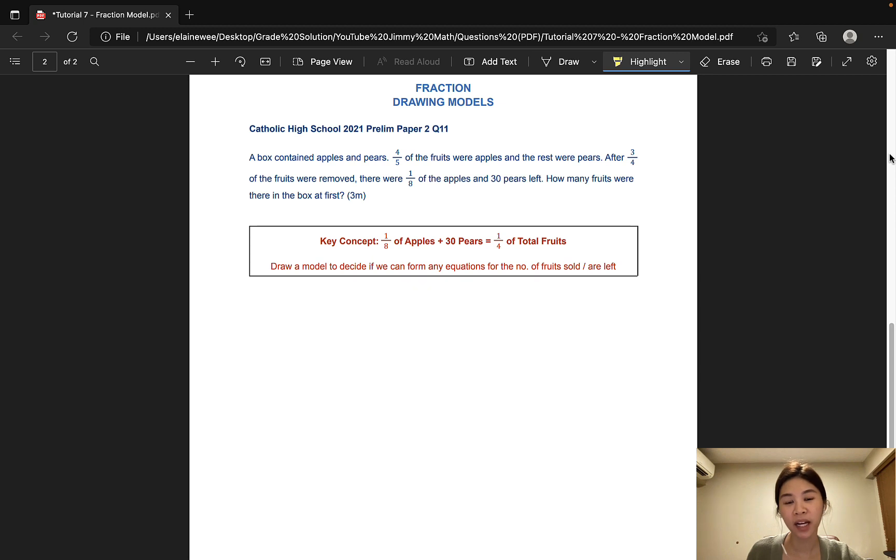Moving on, let's look at a more complex question taken from Catholic High School, and it is worth three marks. A box contained apples and pears. Four-fifths of the fruits were apples and the rest were pears. After three-quarters of the fruits were removed, there were one-eighth of the apples and 30 pears left. How many fruits were there in the box at first? Now, since three-quarters of the fruits were removed, that means one-quarter of the fruits were left. That would mean that one-eighth of the apples and 30 pears would be one-quarter of the total number of fruits.